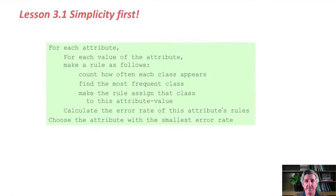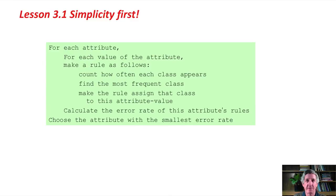Let's look at what this actually means. Here's the algorithm. For each attribute, we're going to make some rules. For each value of the attribute, we count how often each class appears, find the most frequent class, and make a rule assigning that most frequent class to this attribute-value combination. Then we calculate the error rate of this attribute's rules. We repeat that for each attribute in the dataset and choose the attribute with the smallest error rate.